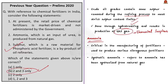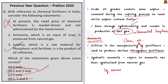Let us also see about ammonia. Ammonia is critical in manufacturing fertilizers and is one of the largest volume synthetic chemicals produced in the world. It is used to produce various nitrogenous fertilizers such as ammonium nitrate, urea, ammonium phosphate and ammonium sulfate. Liquid ammonia is also used as a refrigerant. Synthetic ammonia is synthesized from natural gas, so ammonia can be produced from natural gas. Statement 2 — ammonia which is an input of urea is produced from natural gas — is correct.